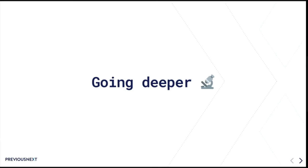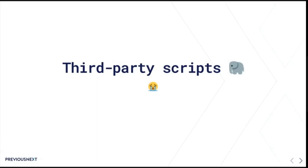Now we get into slightly hairier territory. Before that, I have to address the elephant in the room: third-party scripts. Even if you get your site lean, the marketing department is going to run Google Tag Manager, which downloads Hotjar, which downloads Facebook Pixel, and before you know it you're loading 5 MB of JavaScript. It's all render-blocking because it needs to capture every interaction.